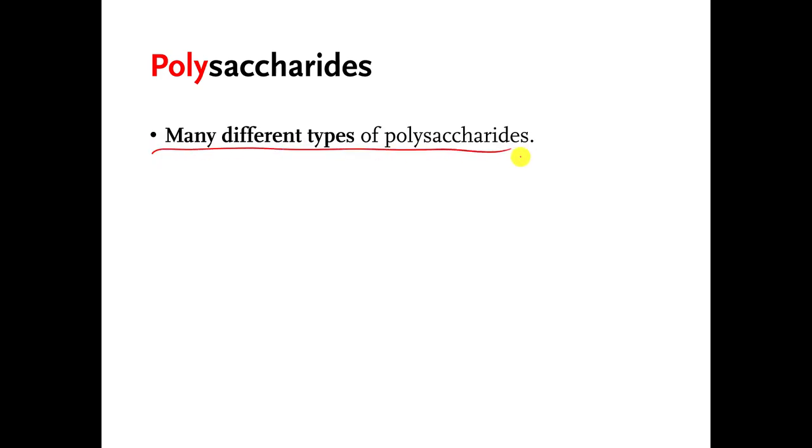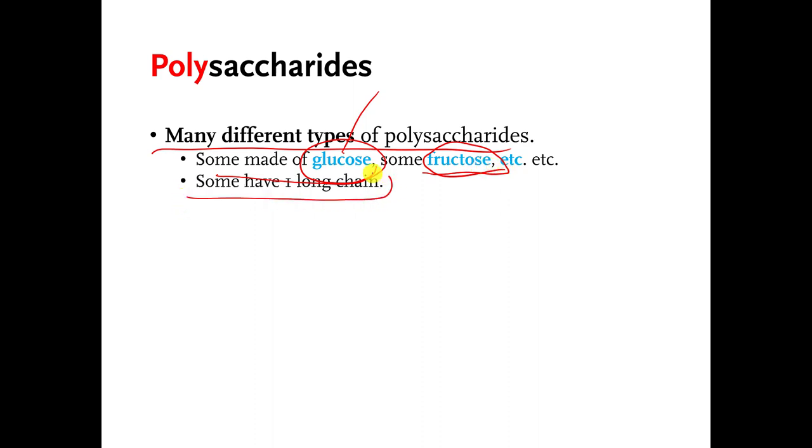There are many different kinds of polysaccharides. Some are made of glucose, which is a monosaccharide. A bunch of glucoses connected to each other over and over again. Some are made of fructose connected to each other over and over again. Some have one long chain, other polysaccharides have branches, and I will show you an example of a branch in a little bit.